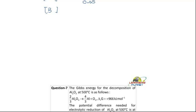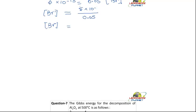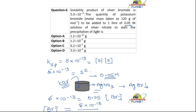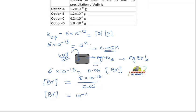The bromide ion concentration so that silver just precipitates as silver bromide should be equal to 5×10⁻¹³ divided by 0.05. This comes out to be 10⁻¹¹. It means you have to add 10⁻¹¹ molar of bromide, so 10⁻¹¹ moles of potassium bromide has to be added.